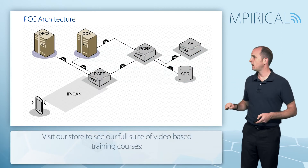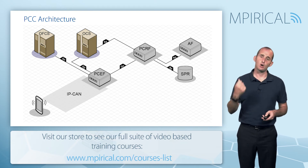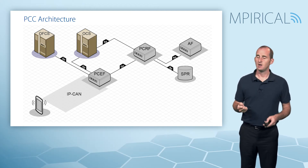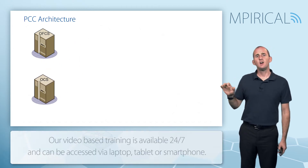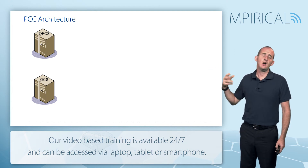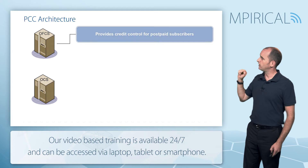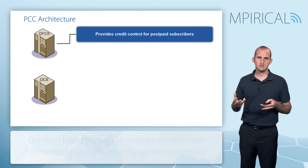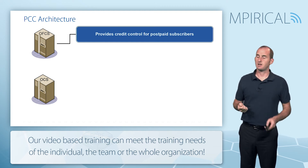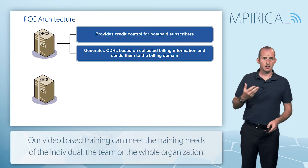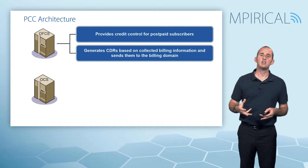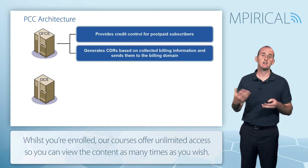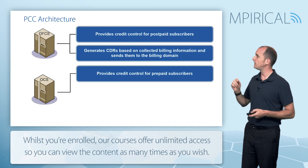The only two entities remaining in our diagram are associated with billing — remember, it's policy and charging control, so it's imperative that as we implement policy we can charge for it if needed. To facilitate that we have the offline charging server and the online charging server — our postpaid and prepaid servers respectively. Looking at the offline charging server first: it provides credit control for all postpaid services, the monthly bill type scenario. The offline charging server generates charging data records and sends those to the billing domain so the subscriber can get their bill at the end of the month.